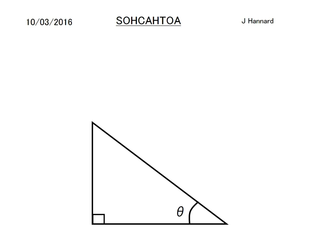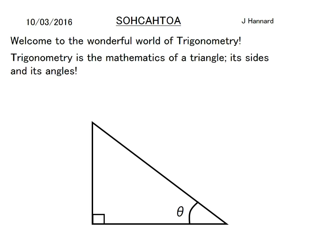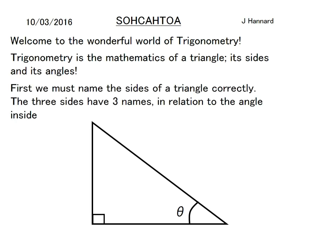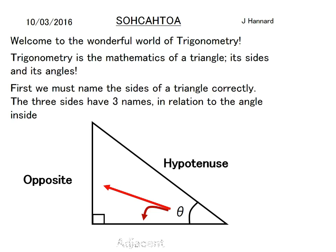Here's a generic right-angled triangle with angle theta. Welcome to the wonderful world of trig. Trigonometry is the mathematics of a triangle — its sides and its angles. First we must name the sides of a triangle correctly; the three sides have three names in relation to the angle inside. That side there is the opposite, that is the hypotenuse because it's the longer side, and the side that joins the right angle and the angle is the adjacent.